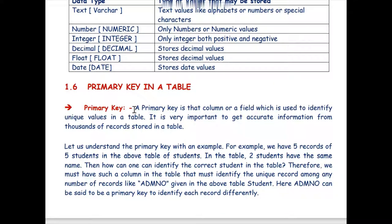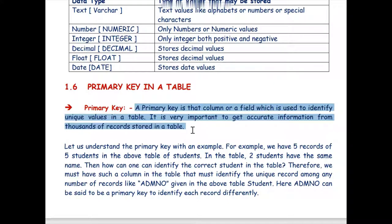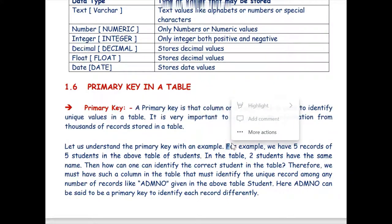First of all a primary key is that column or a field which is used to identify unique values in a table as we have discussed earlier. It is very important to get accurate information from thousands and lakhs of crores of records stored in a table.